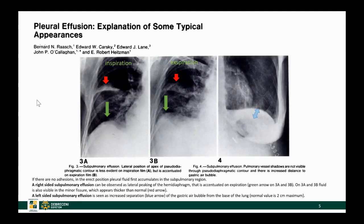When fluid appears in the pleural cavity, it initially collects under the lung, between the lung and the diaphragm. Since this is very difficult to pick up, we normally do not suspect it unless we see it blunting the costophrenic angle or appearing in the horizontal fissure. If you obtain a chest X-ray in expiration, you will see that the normal peaking of the diaphragm will be more lateral on the expiratory image, due to the fact that the fluid is pushing it out towards the lateral side.